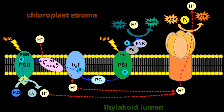Plastoquinol transfers the electron from PSII to the proton pump, cytochrome B6F. The ultimate electron donor of PSII is water. Cytochrome B6F precedes the electron chain to PSI through plastocyanin molecules. PSI is able to continue the electron transfer in two different ways: it can transfer the electrons either to plastoquinol again, creating a cyclic electron flow, or to an enzyme called FNR (ferredoxin-NADP⁺ reductase), creating a non-cyclic electron flow. FNR is released into the stroma, where it reduces NADP⁺ to NADPH.